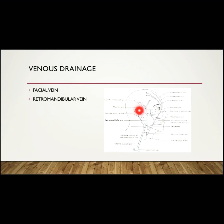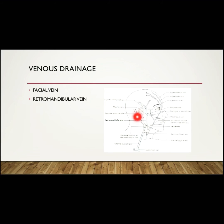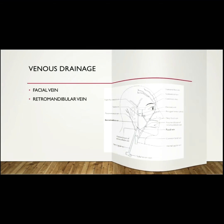The retromandibular vein is formed by the union of the superficial temporal vein and maxillary vein. It emerges from the parotid gland and divides into two — the anterior and posterior divisions. The anterior division joins the facial vein to drain into the internal jugular vein, whereas the posterior division joins with the posterior auricular vein, which ultimately drains into the external jugular vein.